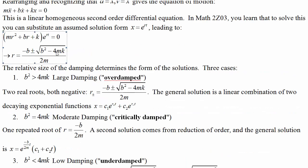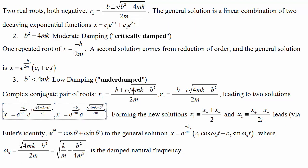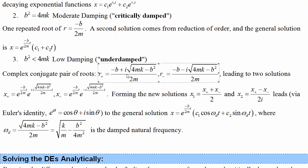And if this thing is imaginary, so we have a negative number under the root and the root gives us an imaginary number, then we have a complex conjugate pair of roots, r plus and r minus.